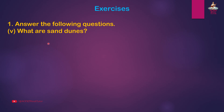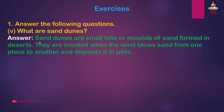Question 5: What are sand dunes? Answer: Sand dunes are small hills or mounds of sand formed in deserts. They are created when the wind blows sand from one place to another and deposits it in piles.